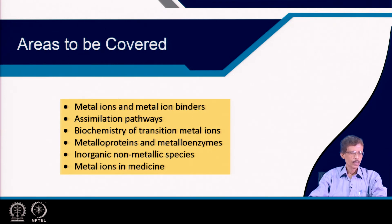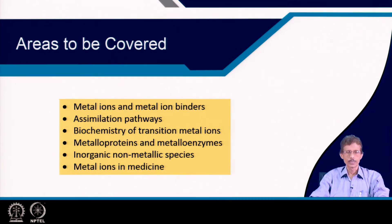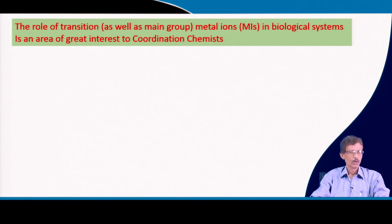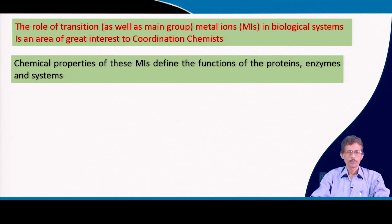Finally, we will briefly consider the involvement of metal ions in medicine, like platinum(II) in cisplatin. We all know this is an anticancer drug readily available in the market and in use for the last 50 years or so. We will focus on metal ions — abbreviated as MIs — in biological systems, which is of great and growing interest to coordination chemists and synthetic chemists. The different chemical properties of these metal ions define the functions of proteins, enzymes, and biological systems.